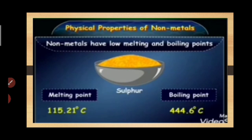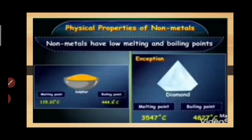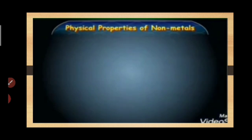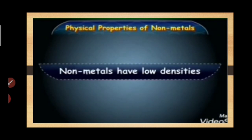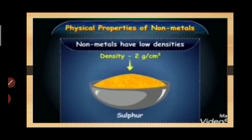Nonmetals have low melting and boiling points. For example, the melting and boiling points of sulphur are relatively low, but the melting and boiling point of diamond is very high. Nonmetals also have low densities; for example, the density of sulphur is about 2 g per cm³.